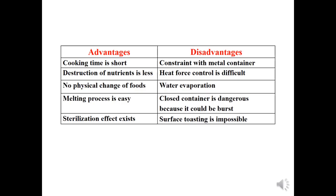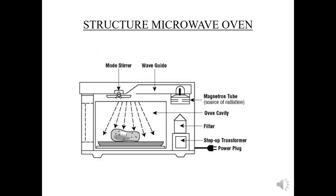Surface toasting is also impossible in microwave ovens. This is the structure of a microwave oven. The main component is the magnetron tube — the source and generator of microwave radiation. Other parts include the mode stirrer, waveguide, oven cavity, filter setup, transformer, and power plug.